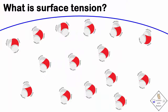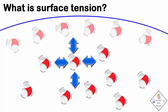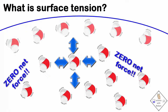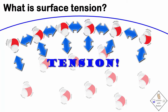Molecules that make up a liquid stick to one another through attractive forces, also called cohesive forces. In the bulk of the liquid, each molecule is pulled equally in every direction by its surrounding liquid molecules. This results in a net force of zero. However, molecules at the surface of a liquid do not have a net force of zero. They are generally being pulled inwards toward the bulk of the solution, and this creates a net inward force, or tension.